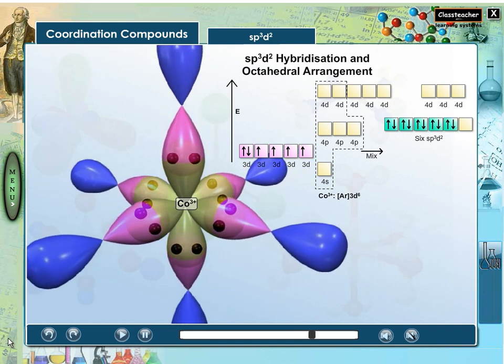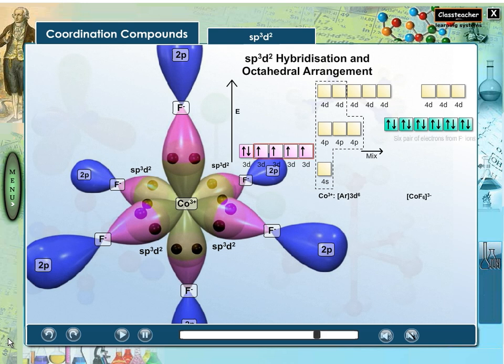The compound is paramagnetic since it contains unpaired electrons. The compound is also called an outer orbital or high spin or spin-free complex as it uses outer 4d orbitals for hybridization.